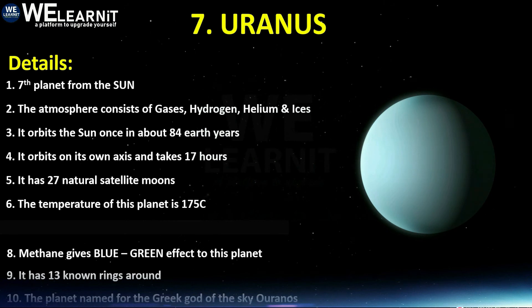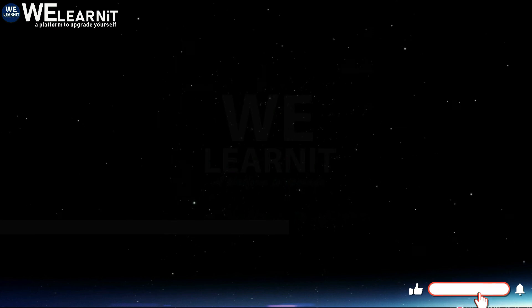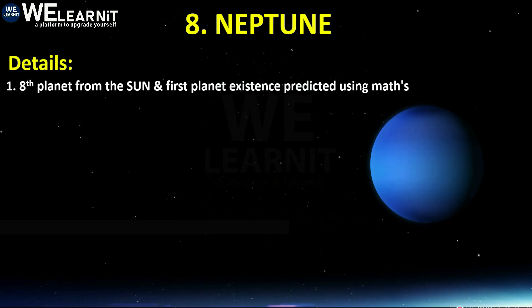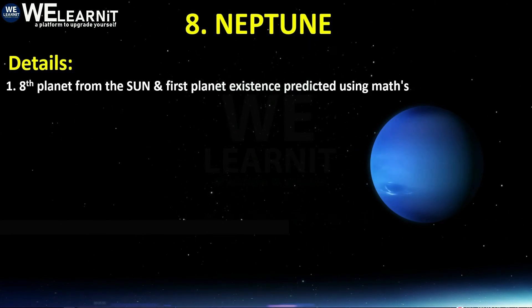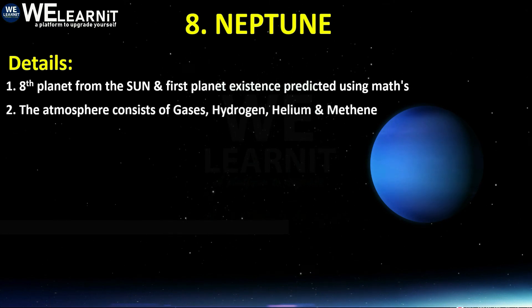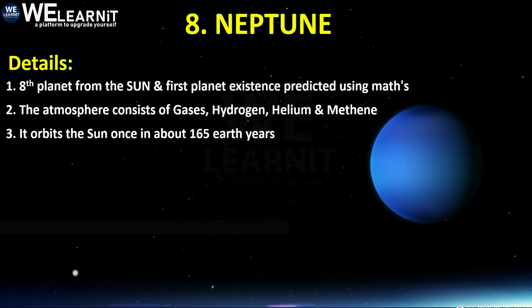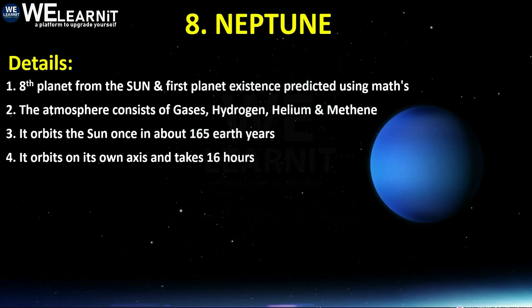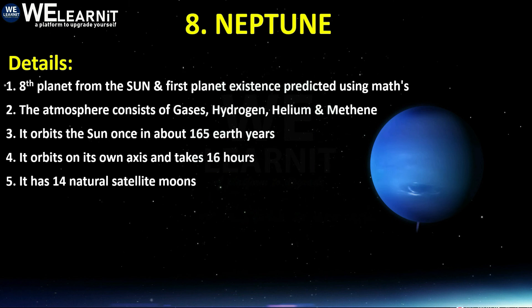The eighth and last planet is Neptune. Neptune is the eighth planet from the Sun and the first planet whose existence was predicted using mathematics. Its atmosphere consists of hydrogen, helium, and methane. It orbits the Sun once in about 165 Earth years. Neptune orbits on its own axis and takes around 16 hours to complete one round. It has 14 natural satellites — 14 moons.